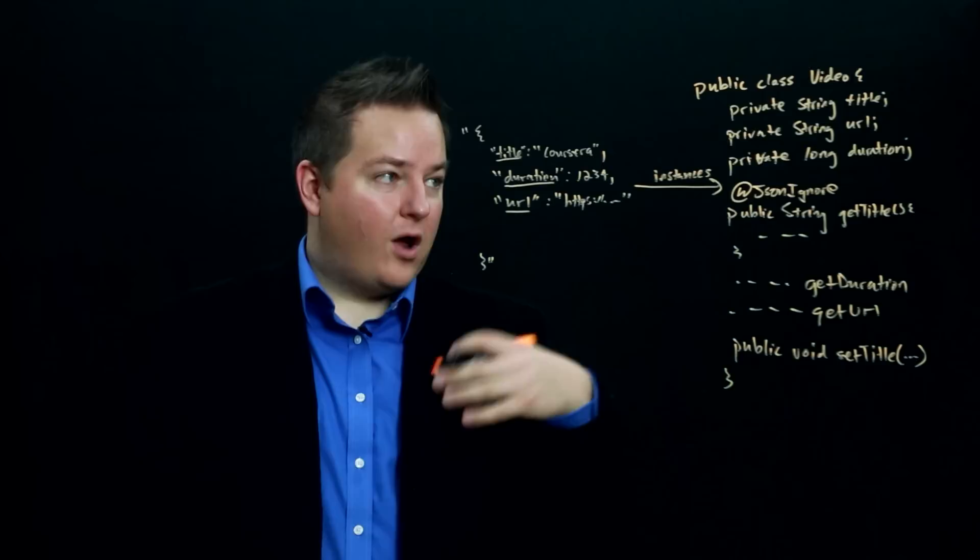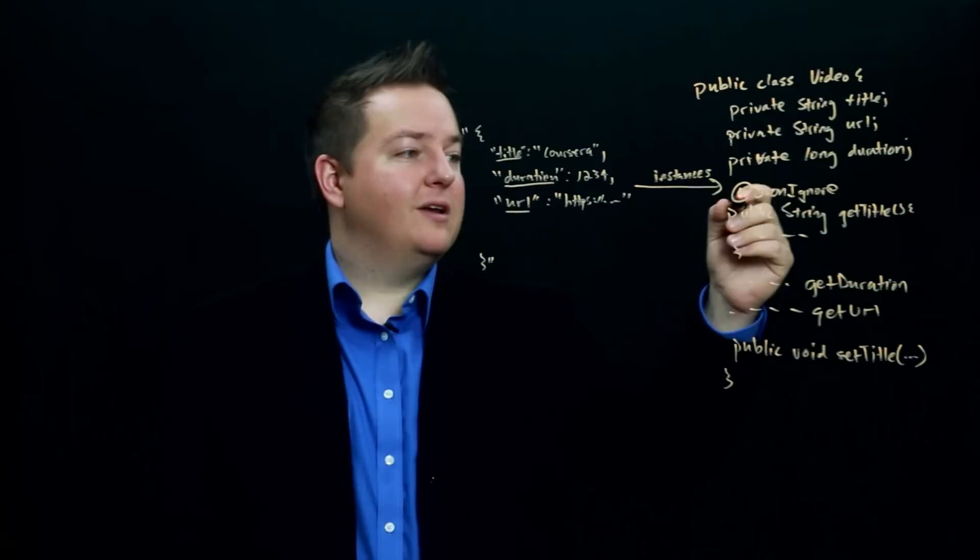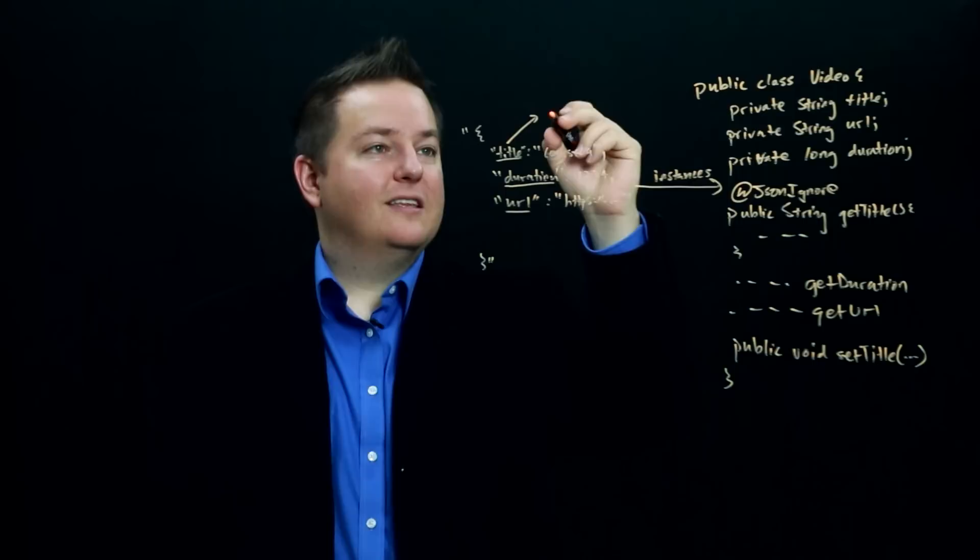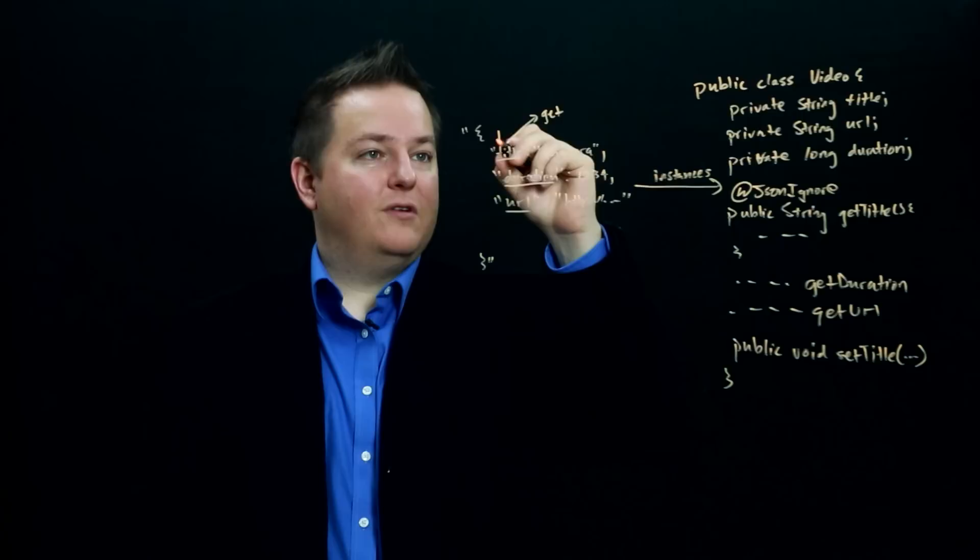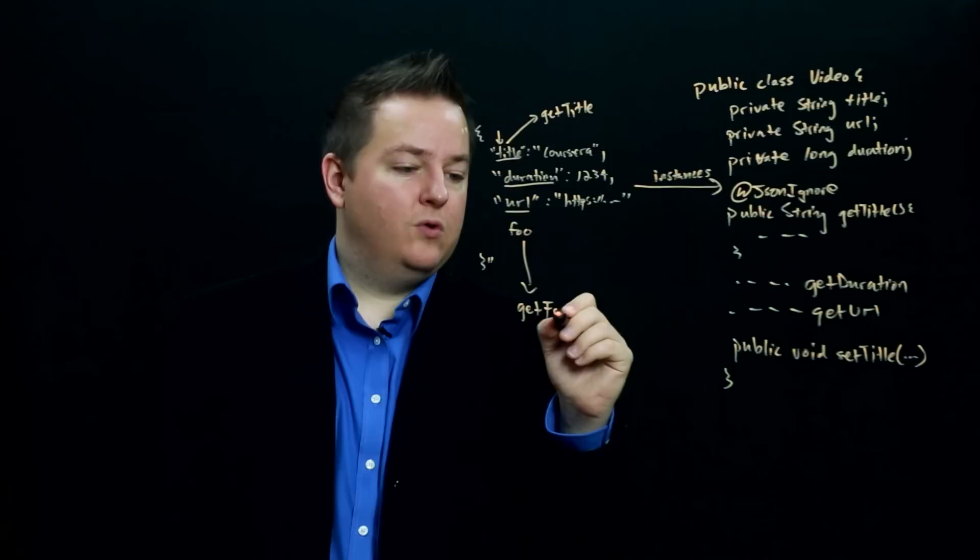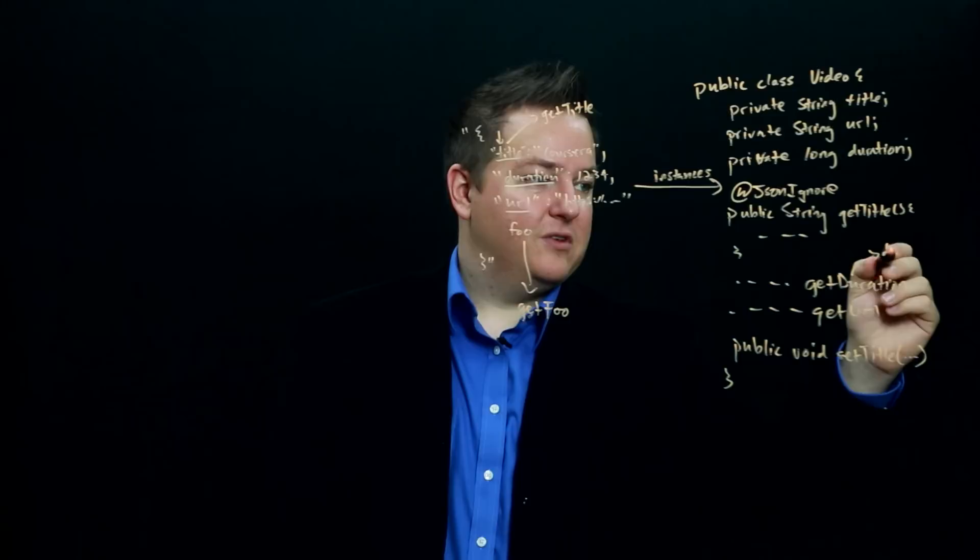There's also the ability to specify certain properties that you would like to name differently. So the default naming scheme is it's going to take a property. It's going to title case the first letter of the property. So it'll go get plus it's going to take the first letter and uppercase it. So that gets converted into get title. If you had foo here, that would get converted into get foo. And similarly, if you have a get duration method, that's automatically going to become the JSON property duration.